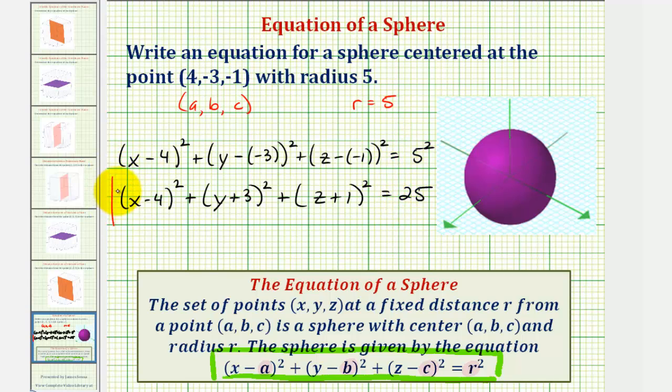So this would be the equation of the sphere with center (4, -3, -1) and radius 5.